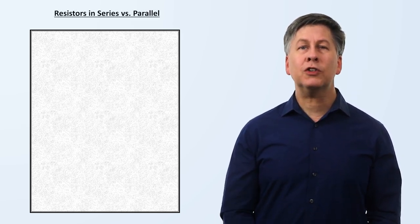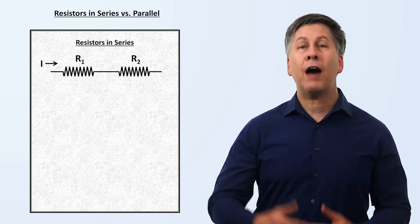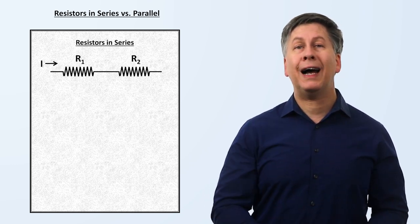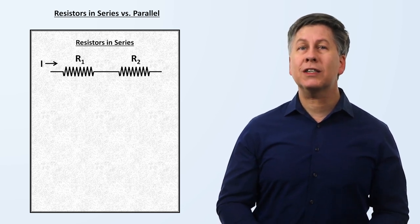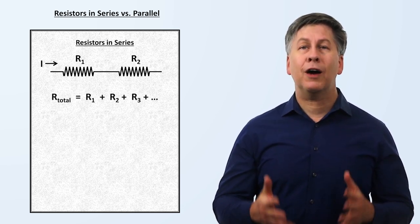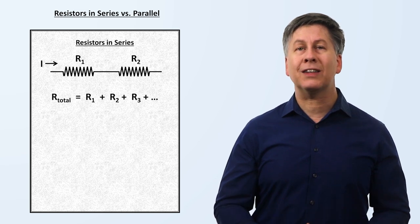For example, resistors can be placed along the same branch of wire, one after another, which is referred to as resistors in series. In this case, the total resistance is equal to the resistance of each individual resistor added together.